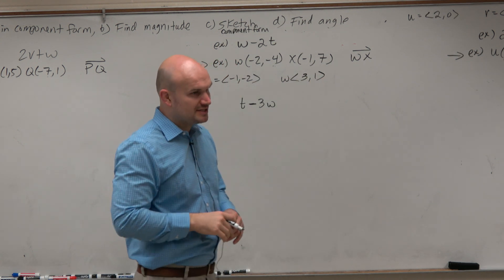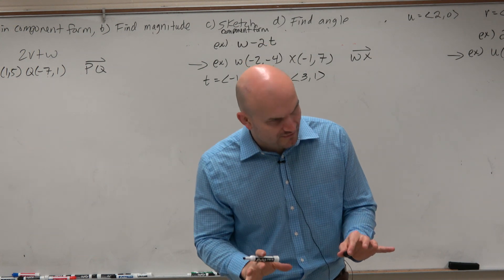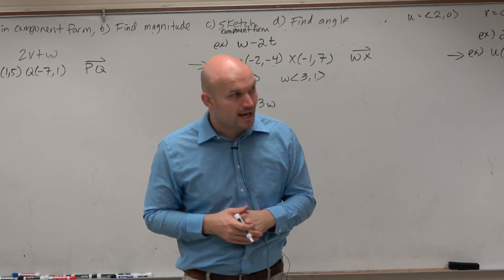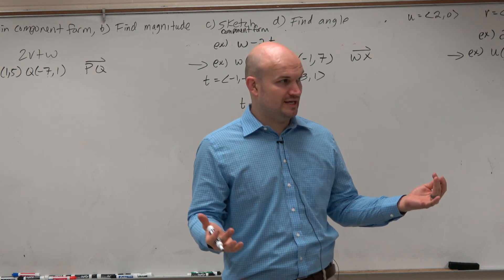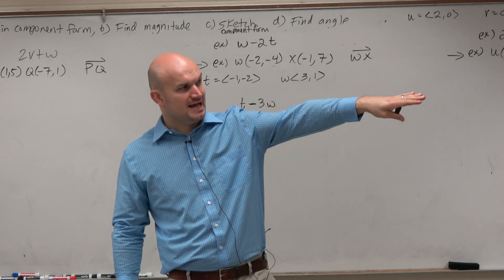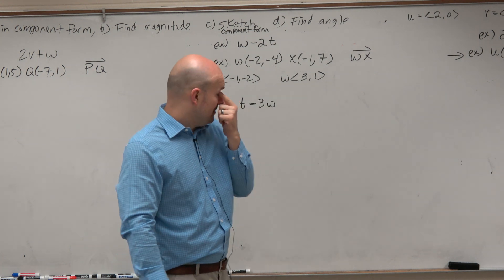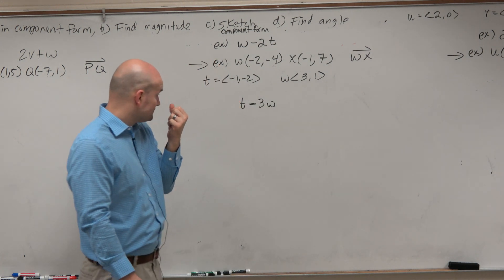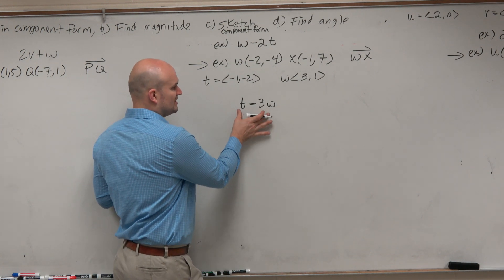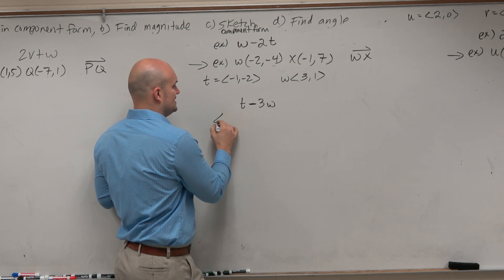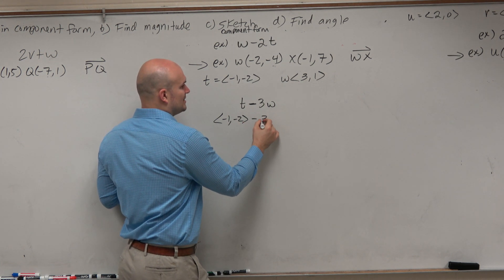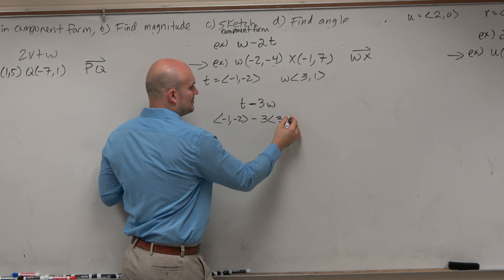So what I'm going to ask you to do is to find the resultant vector, which is the difference of those two vectors, as well as sketch the vectors with the resultant vectors. You can see we have vector addition and scalar multiple. So we can just write in our vectors here — t is negative 1, negative 2, and that's going to be minus 3 times w, which is 3, comma 1.